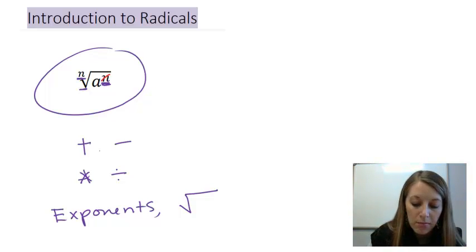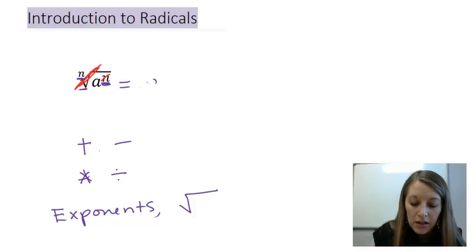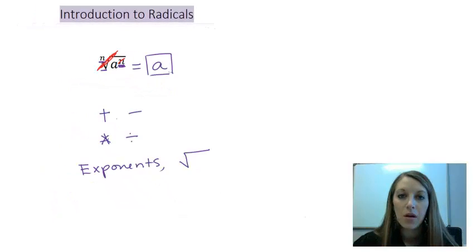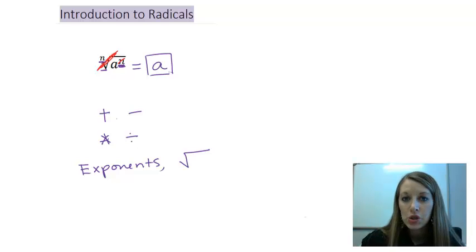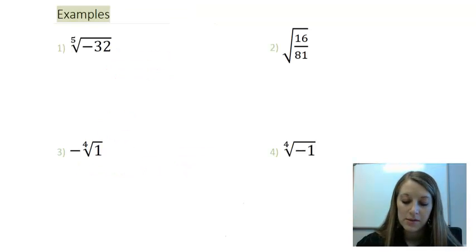My nth radical and my nth root cancel out, and that just leaves us with the base on the inside, or that leaves us with base a in this example. So, let's see some actual examples of this, and I have four of them here.